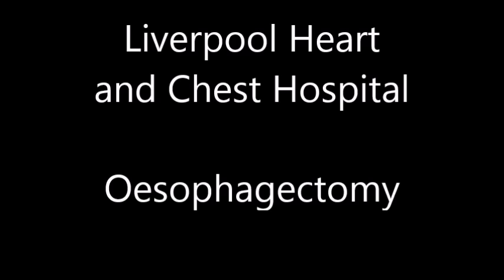How long does the procedure take? The procedure usually takes approximately 4 hours, although this varies depending on each individual's condition. The main aim of the surgery is to remove the cancer, and the treatment may be combined with chemotherapy and/or radiotherapy. Surgical removal of the gullet is currently the only potential cure for oesophageal cancer. Not everyone with oesophageal cancer is suitable for surgery. Other treatments which aim to control the spread of the disease and alleviate symptoms include chemotherapy, radiotherapy, and stent insertion. A stent is a wire mesh tube which helps to keep the oesophagus open.